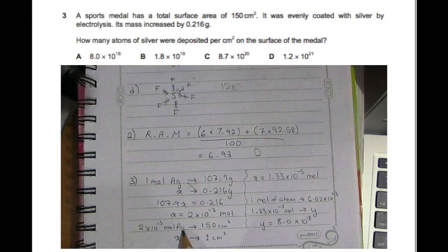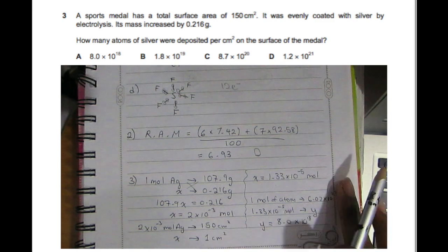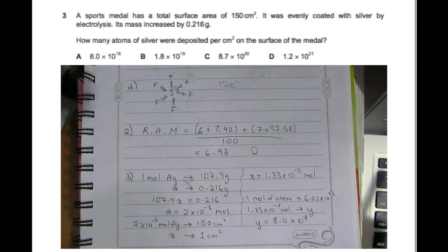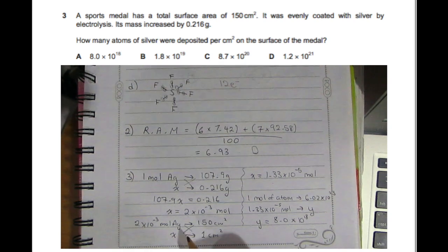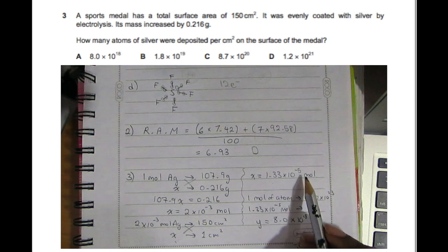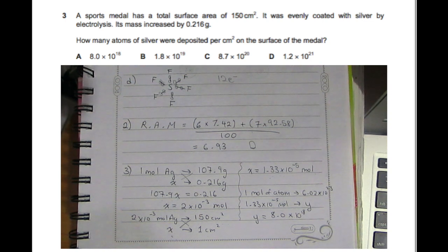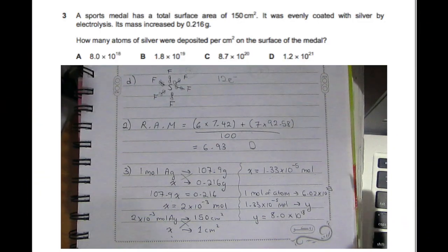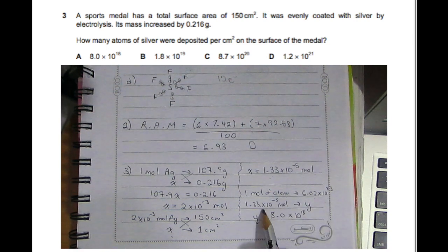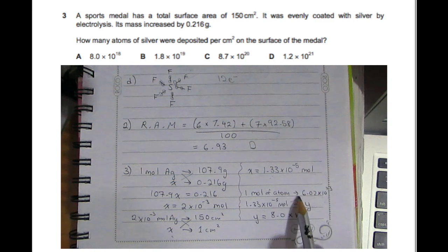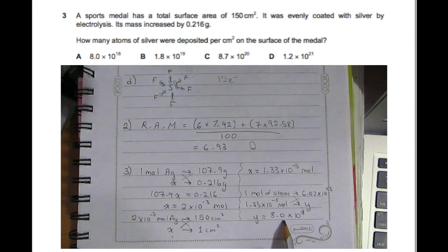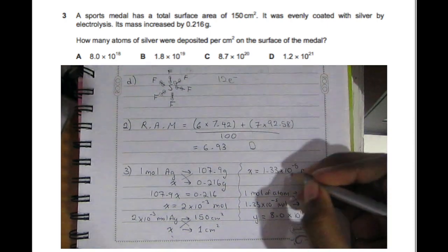We need 2×10⁻³ moles of silver to coat 150 cm². They asked how many atoms per cm², so for 1 cm², cross multiplying gives X equals 1.33×10⁻⁵ moles. Converting moles to atoms using Avogadro's constant, 6.02×10²³, gives Y equals 8.0×10¹⁸ atoms. The answer is A.